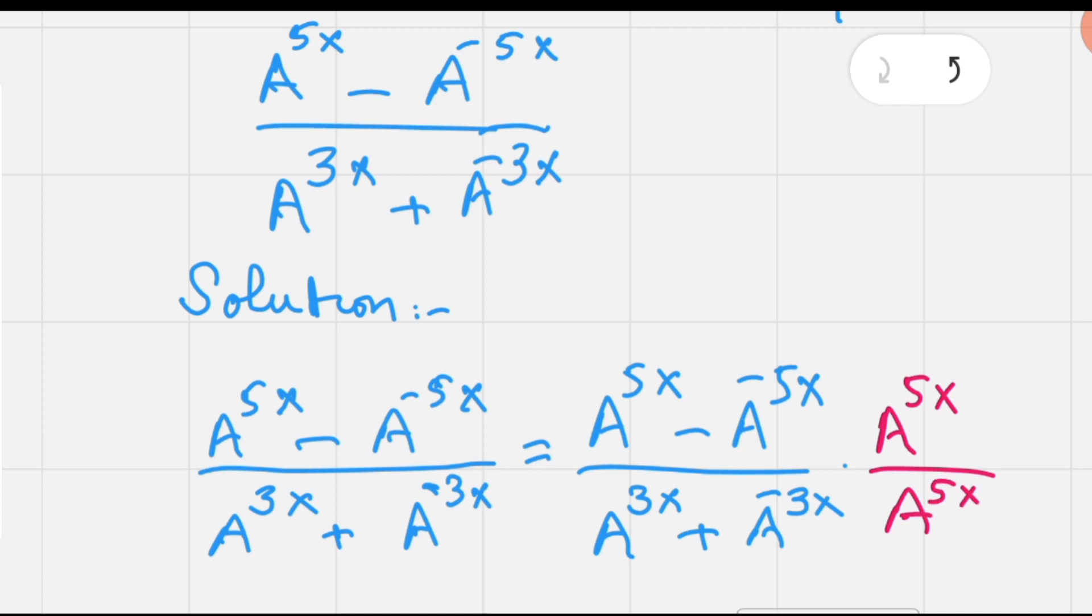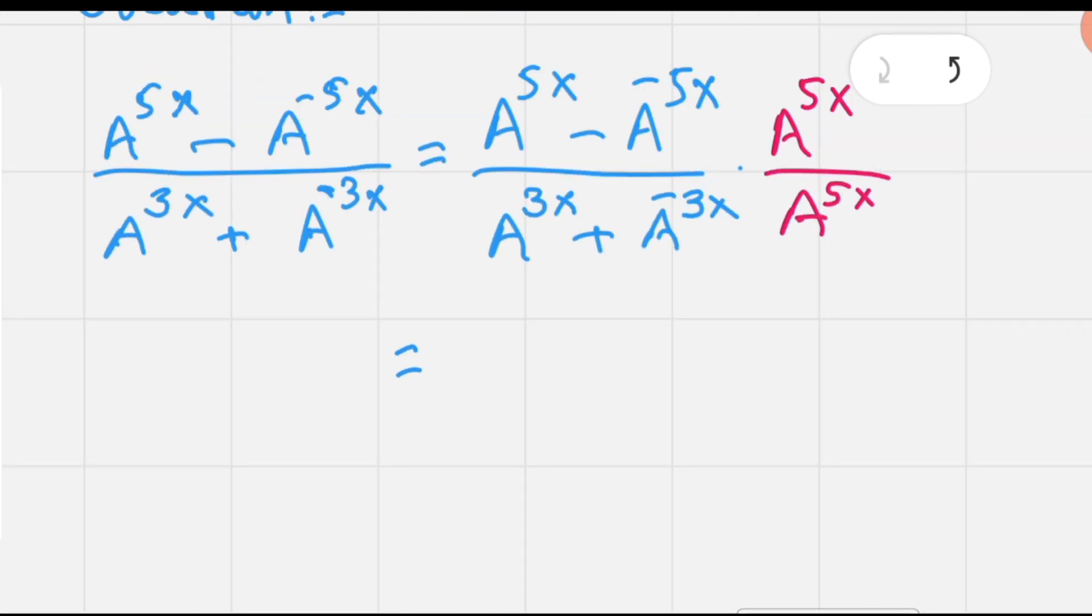Now, multiplying A^(5x) with numerator such that we will have A^(5x) times A^(5x) minus A^(-5x) times A^(5x).